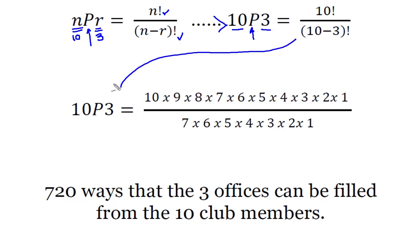Moving down, we expand our factorials, and what we immediately notice is that these and these cancel out, leaving us simply the 10 times the 9 times the 8, which gives us 720 ways that the three offices can be filled from the 10 club members, knowing that A, B, and C is not the same grouping as C, B, and A.